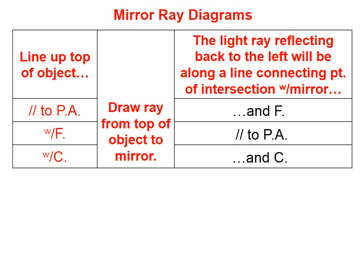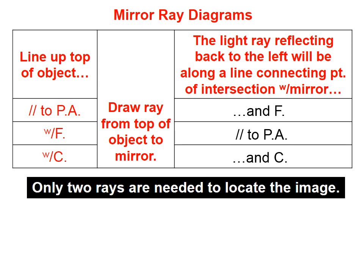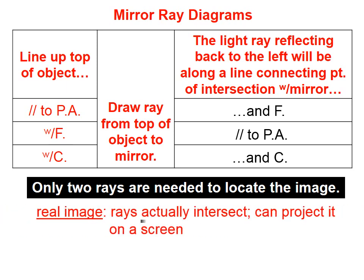The last rule is if you line up the top of the object with the center of curvature and head towards the mirror, when you reflect back, you reflect along a line through that same center of curvature. Now there are three rules, but you only need two of them to locate your image.